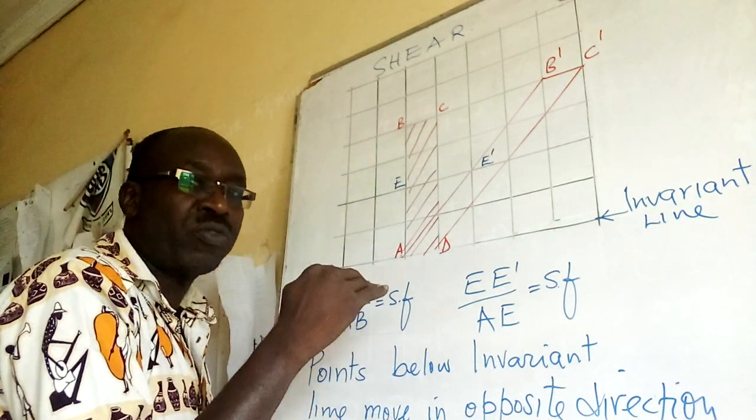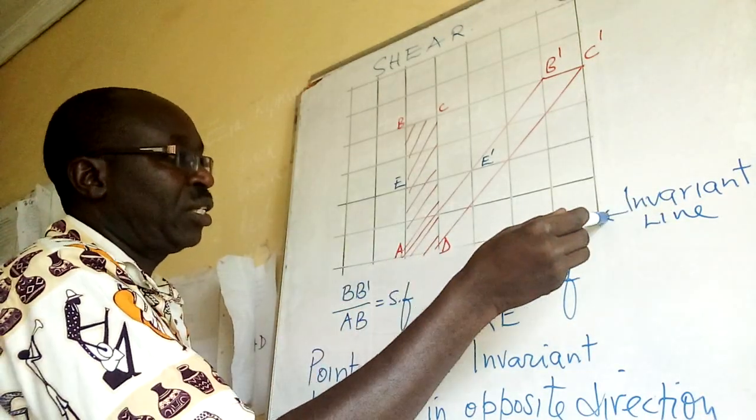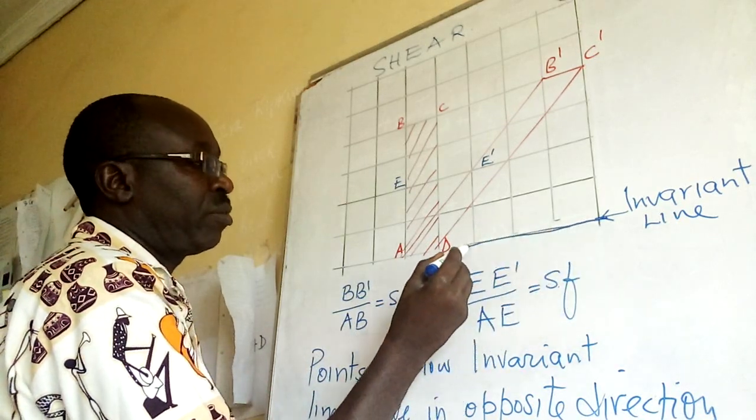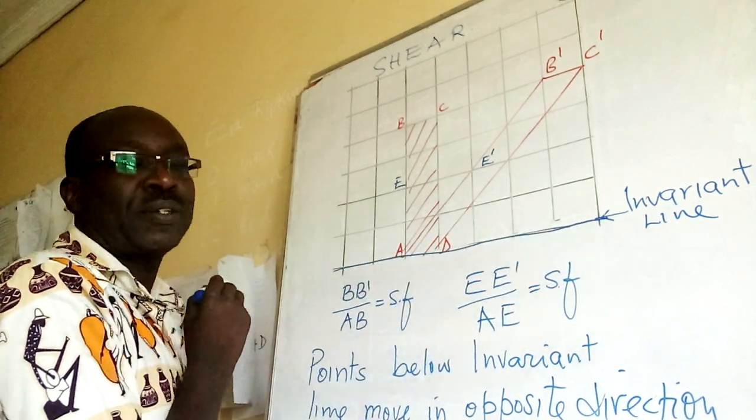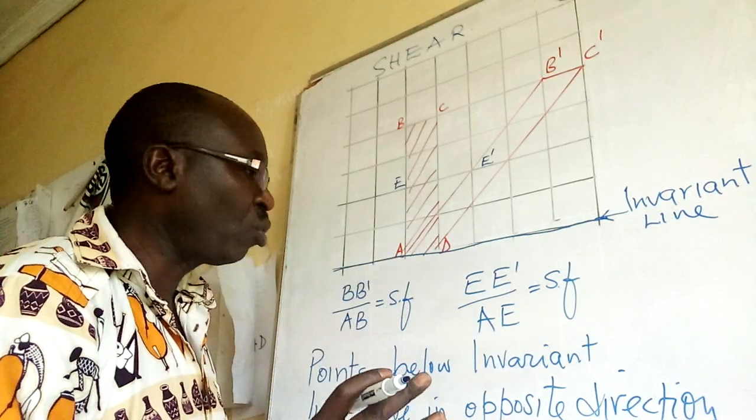Depending on how far that point is from the invariant line. So I've taken this to be my invariant line. All of this is my invariant line.